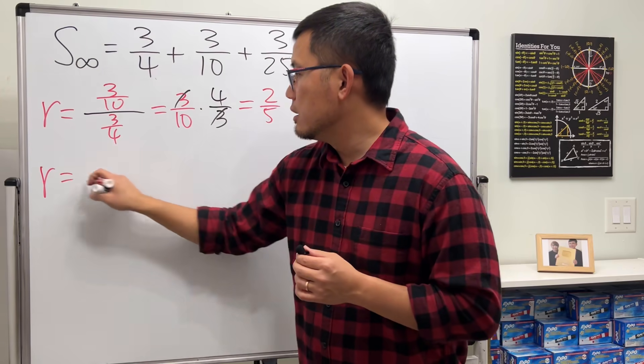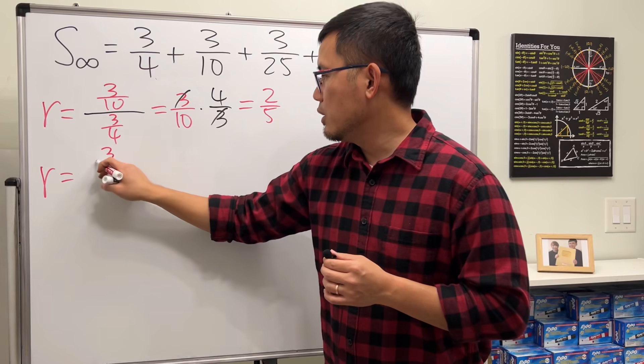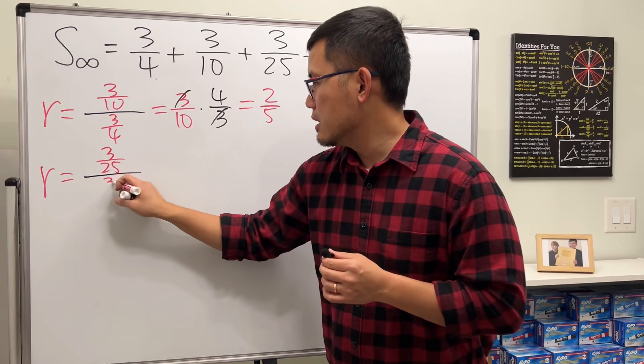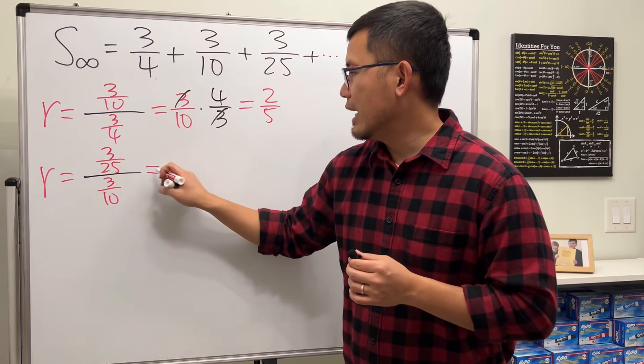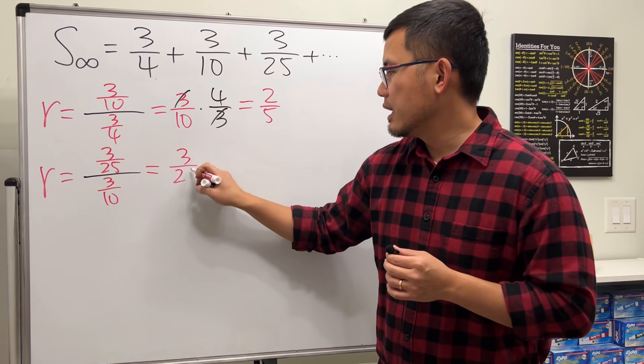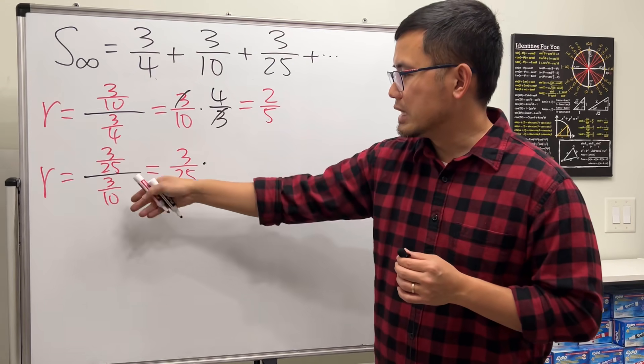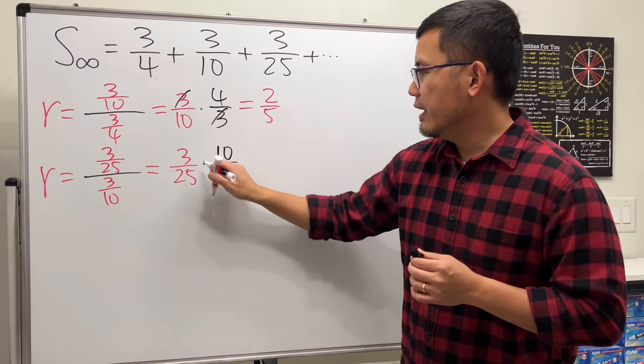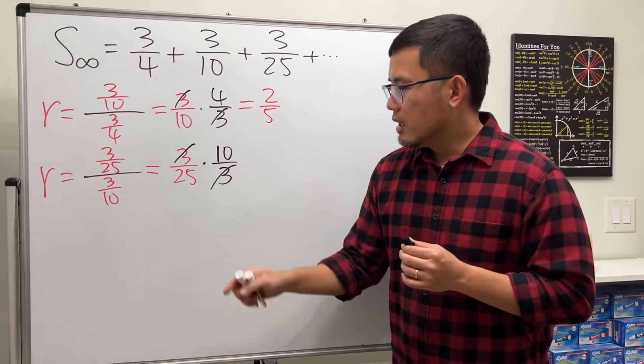So r, this right here, is 3 over 25 divided by 3 over 10. Looks like we have 3 over 25 times the reciprocal of that, which is 10 over 3, and the 3 cancels out.